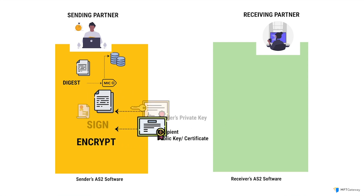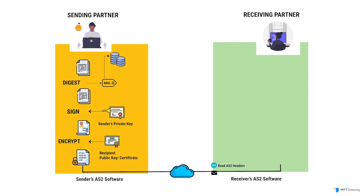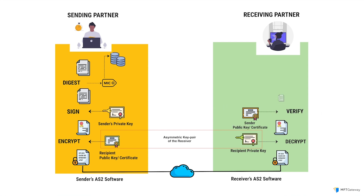This ensures that an AS2 message transmitted over the internet can only be decrypted using the corresponding private key held by the receiving party. Upon reception, the recipient decrypts the message and verifies its authenticity by confirming it was signed by the corresponding sender, which can be done using the sender's public key or certificate.